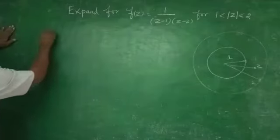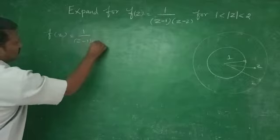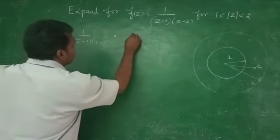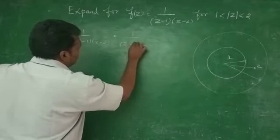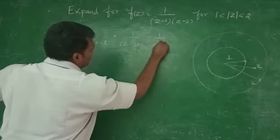f(Z) = 1/((Z-1)(Z-2)) can be written as 1/(Z-2) minus 1/(Z-1).